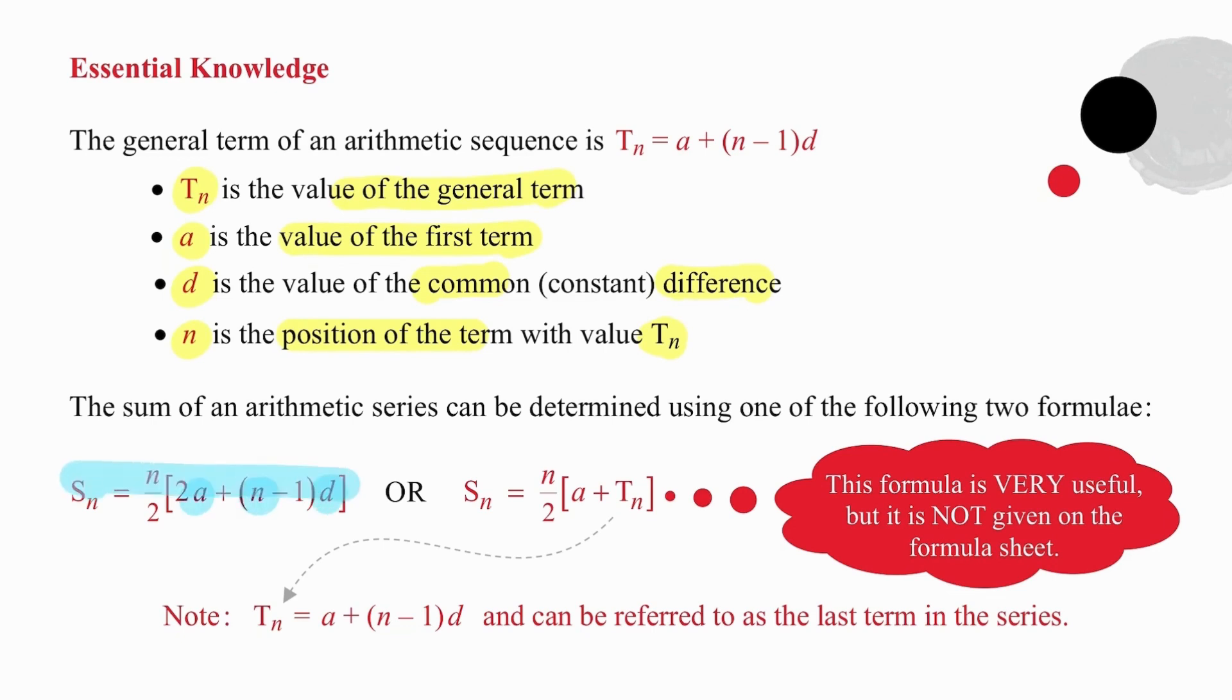If you have the A and the N and the D value, then you use this formula. And if you don't know the D value, but you're lucky enough to know the Nth term or the last term in the sequence, then this formula works very well. Pause the video if you want to process that in your own time.